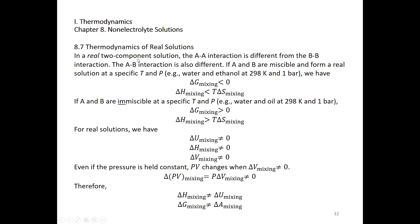In a real solution of two components A and B, the AA interaction is different from the BB interaction, and they are also different from the AB interaction. Therefore, by mixing A and B, we change the internal energy of both A and B. If A and B are miscible and form a real solution at a specific temperature and pressure — for example, water and ethanol at room temperature and one bar — then delta G mixing of water and ethanol is less than zero.